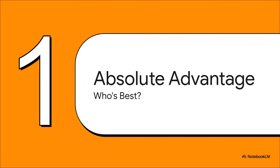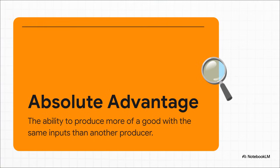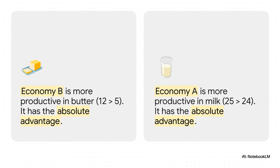The first way to look at this is the most straightforward — we just ask a simple question: who is flat out better at making each thing? This is what economists call absolute advantage. To put it simply, absolute advantage just means you're the most productive. It's a straight-up comparison: if you and I are both baking cookies and you can bake way more cookies in an hour than I can, you've got the absolute advantage. So looking at our numbers, for butter, economy B is the clear winner, churning out 12 tons to A's five. For milk, it's super close, but economy A just barely edges out B, 25 tons to 24. So the absolute advantage in milk goes to A.